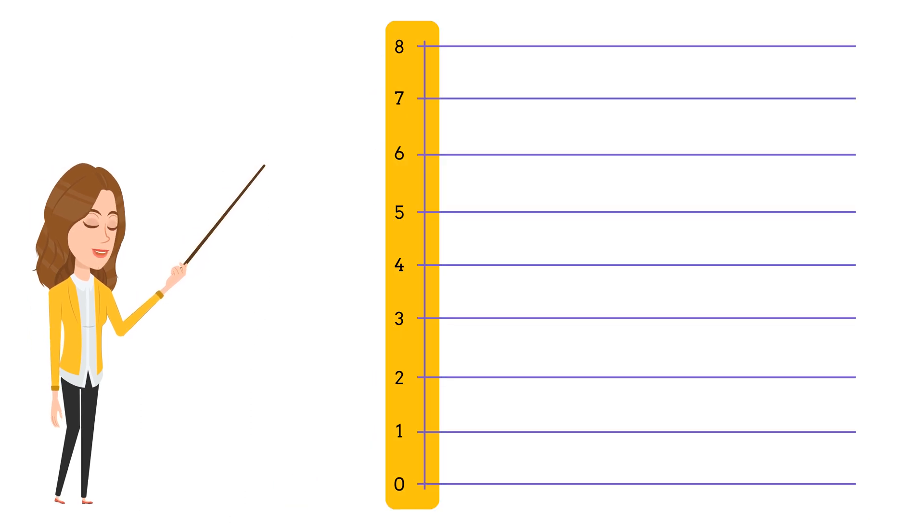This vertical line here is called the vertical axis. It's like the up and down line on a graph. We use it to show the numbers we're measuring. Today, we're going to measure the number of cookies.